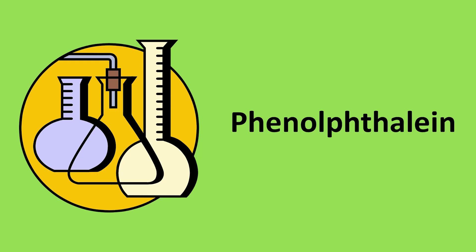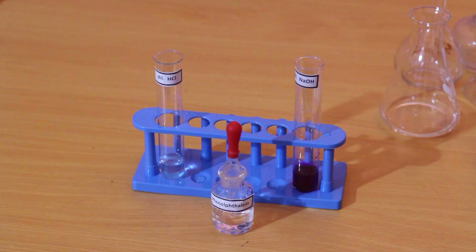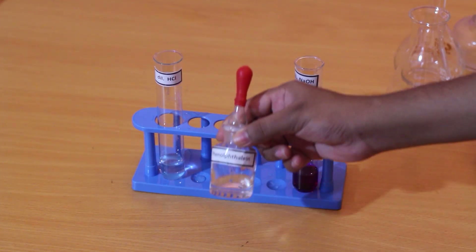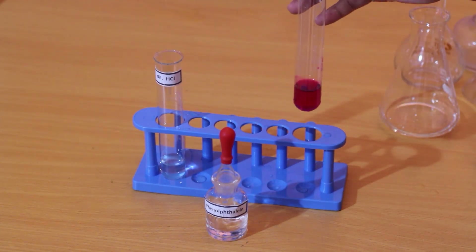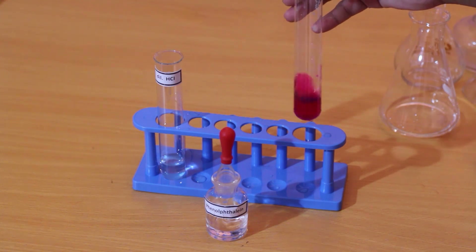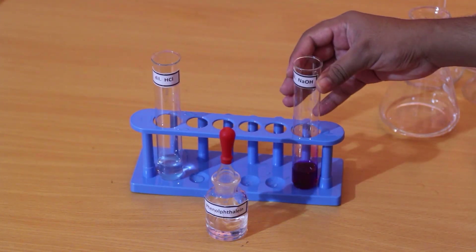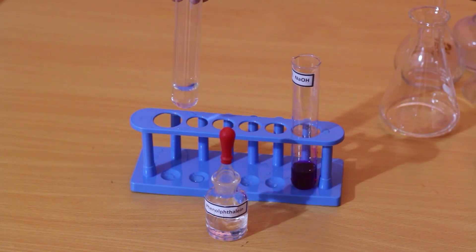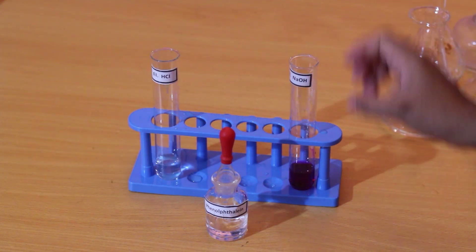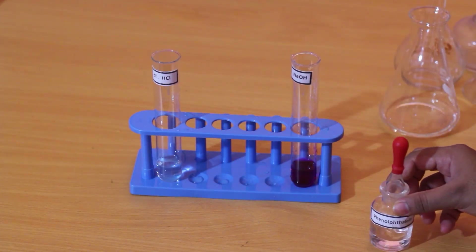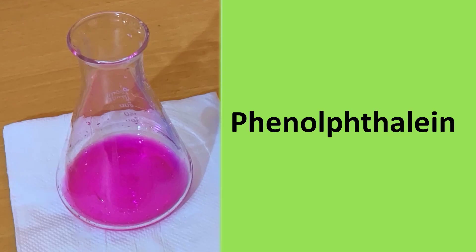Let's see how we can differentiate an acid solution and a base solution by using the indicator phenolphthalein. Phenolphthalein itself is a colorless solution. Phenolphthalein turns into pink in sodium hydroxide solution, and the indicator stays colorless in hydrochloric acid solution. This is the pink color phenolphthalein gives in basic solutions like sodium hydroxide.